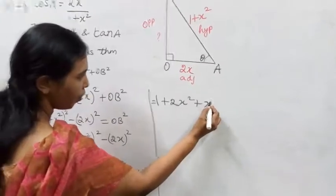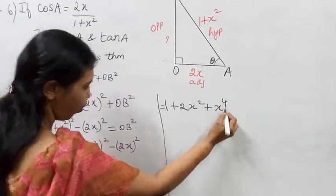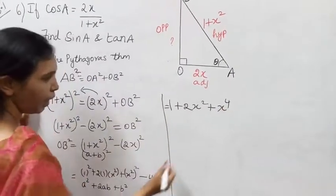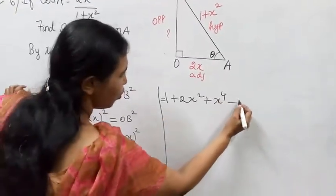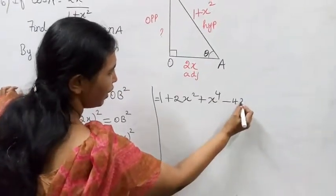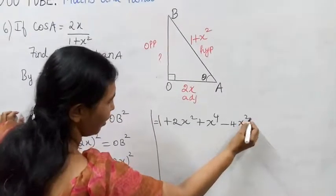This gives x to the power 4, minus 4x squared.